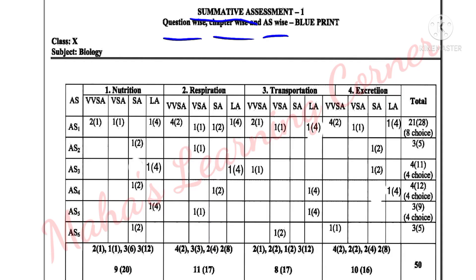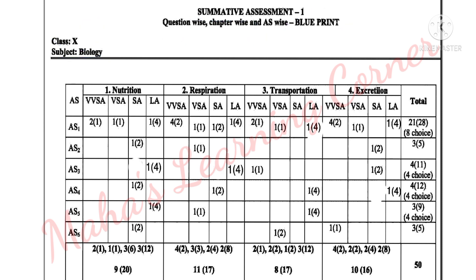This is Summit Assessment 1, question by question, chapter-wise, academic standards-wise blueprint for the subject Biology for 10th class. Summit Assessment covers four lessons on the paper: the first lesson covers nutrition, respiration, transportation, and excretion. The academic standards and low marks are shown as per the blueprint.